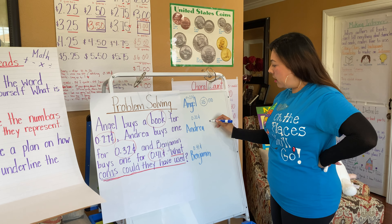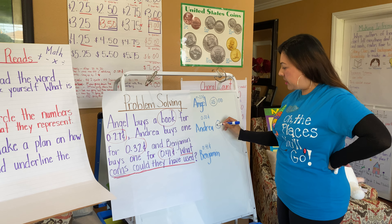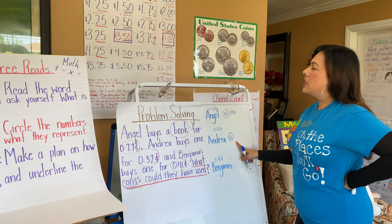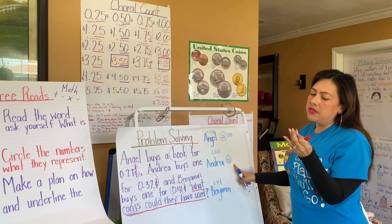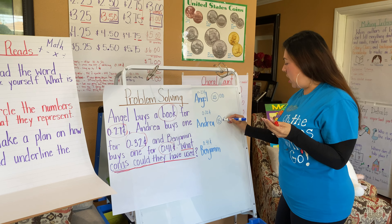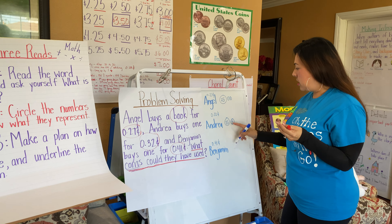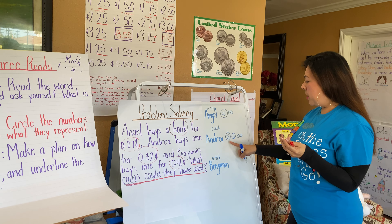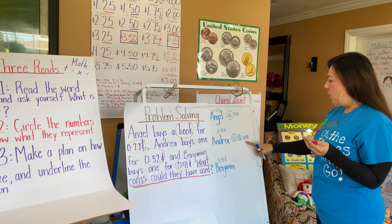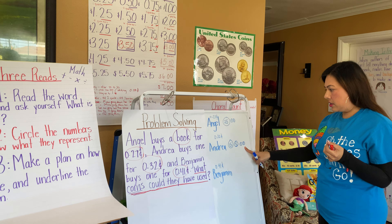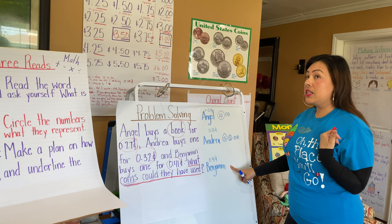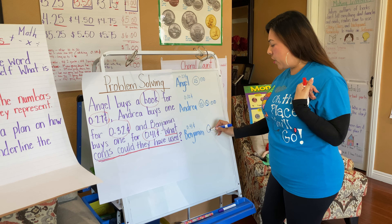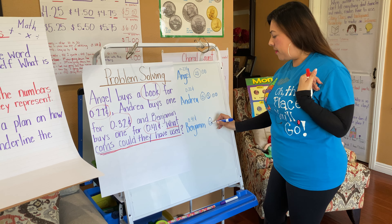Angel needs 27 cents. How can I represent 27 cents with coins? The easiest way: I'm going to use a quarter and two pennies — 25, 26, 27. Do you agree that makes 27 cents? It does.